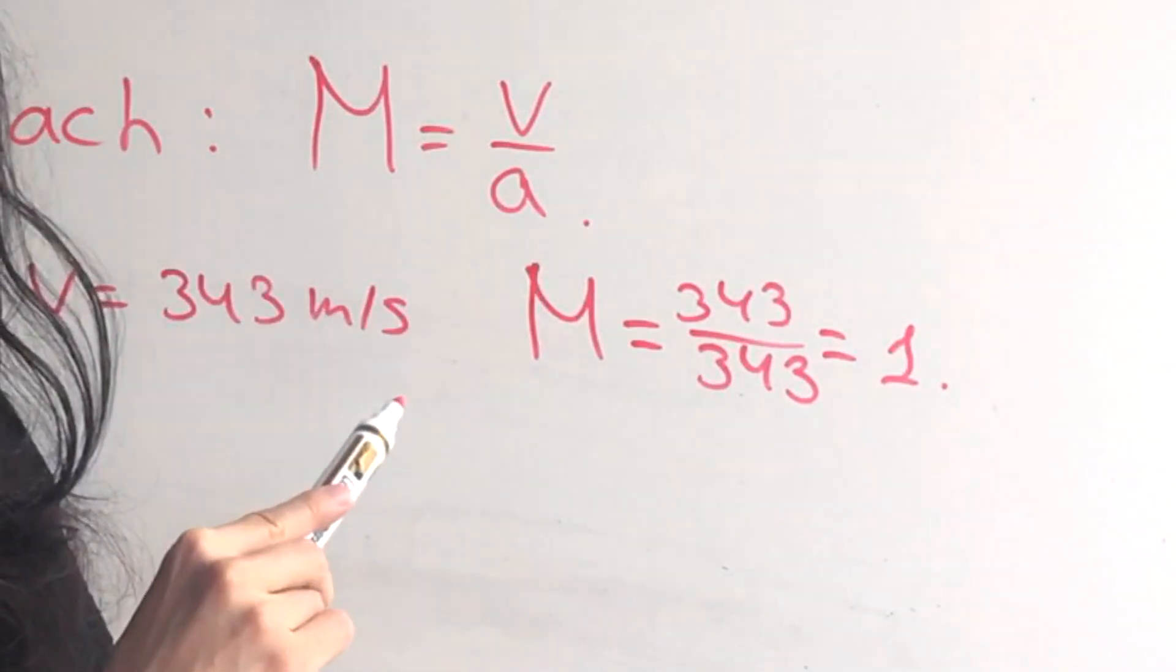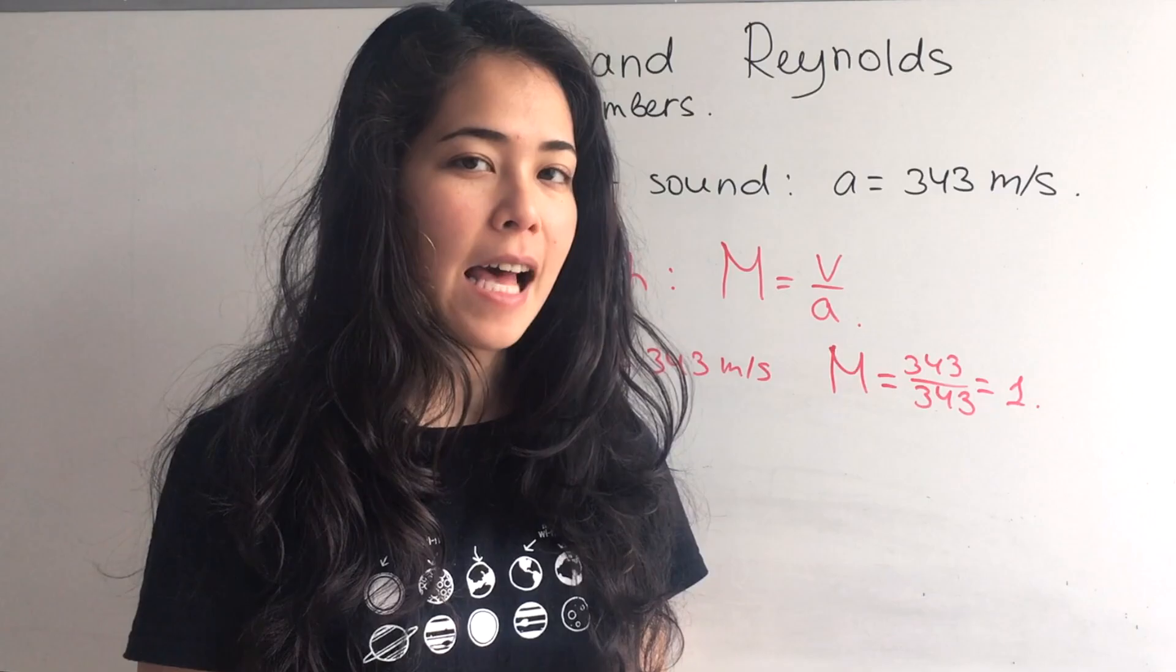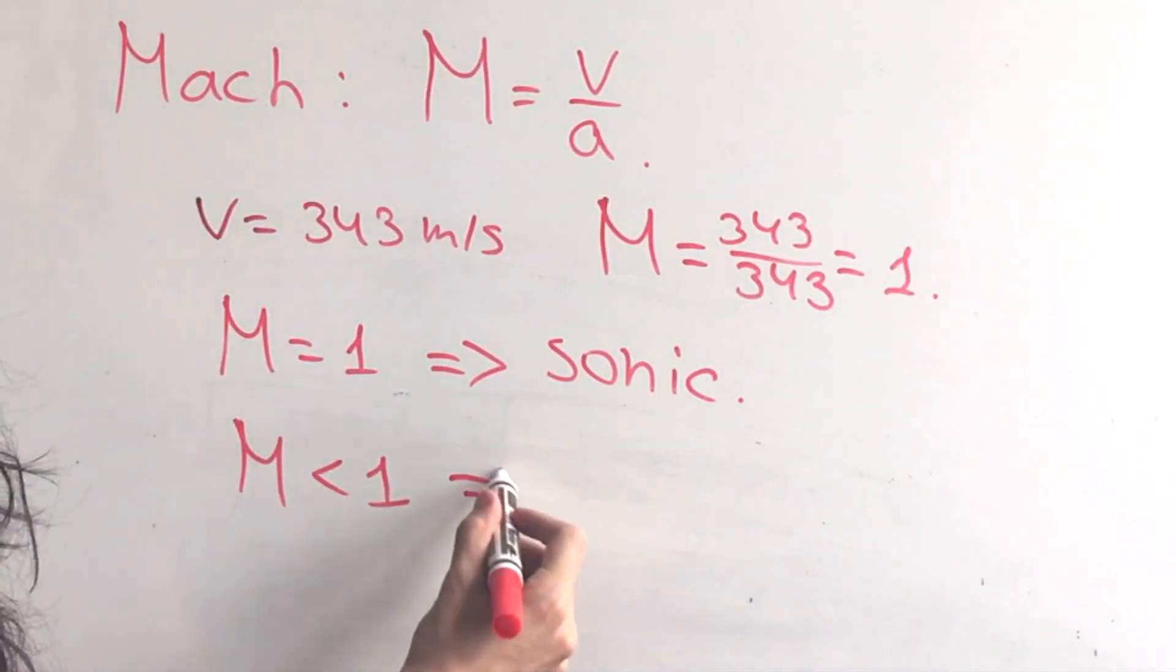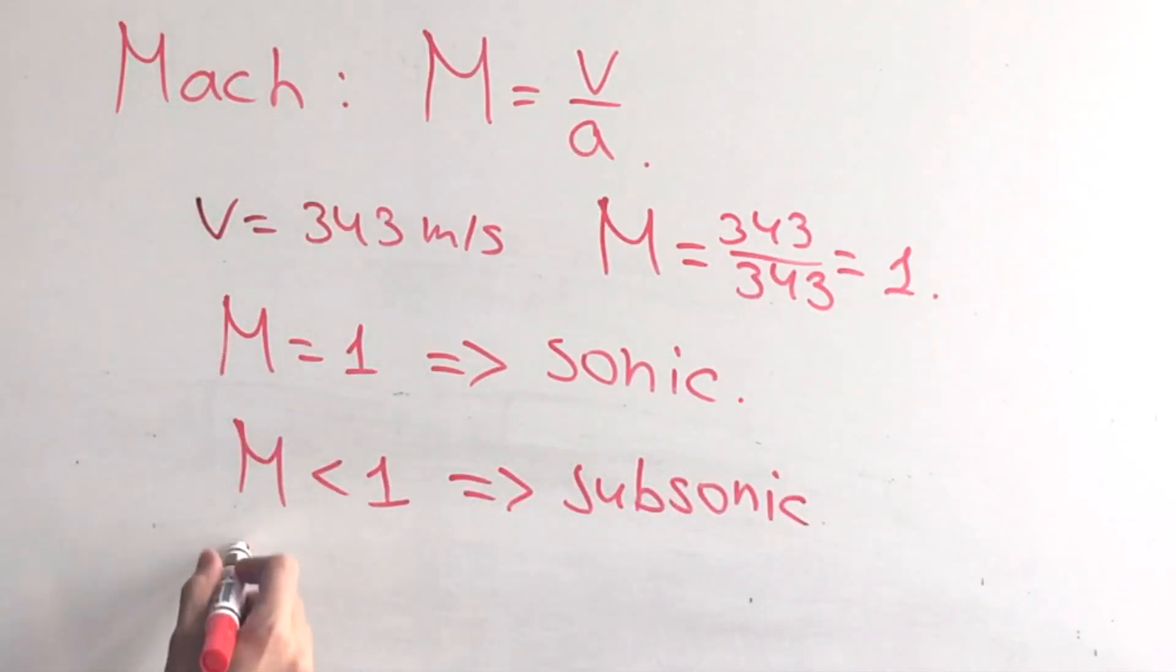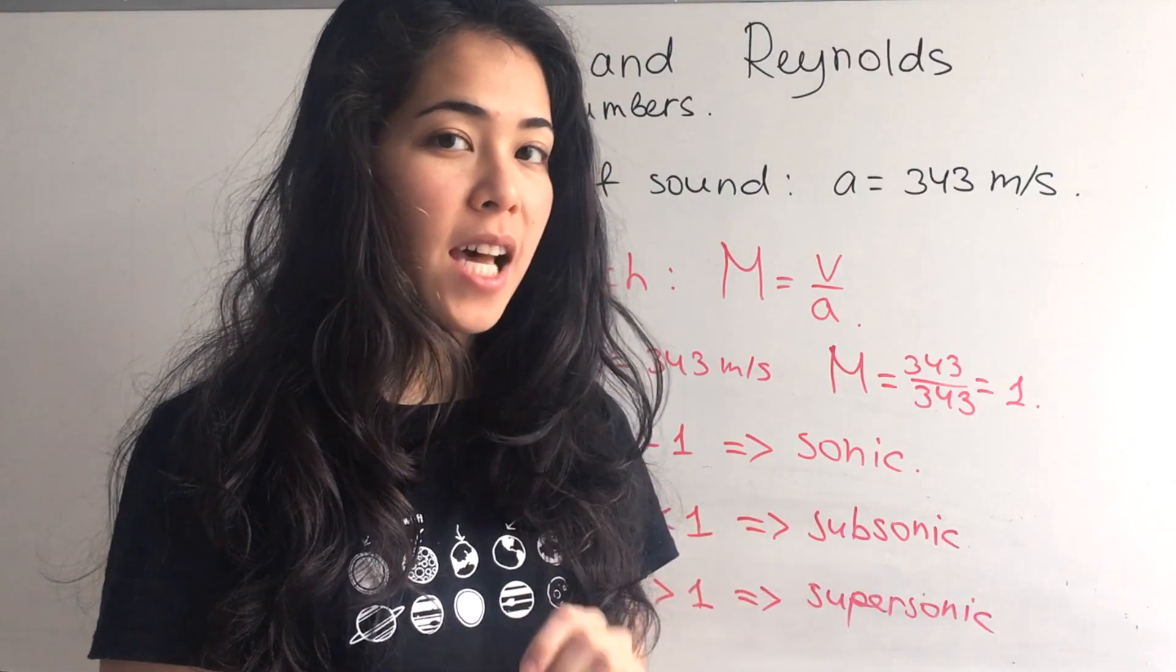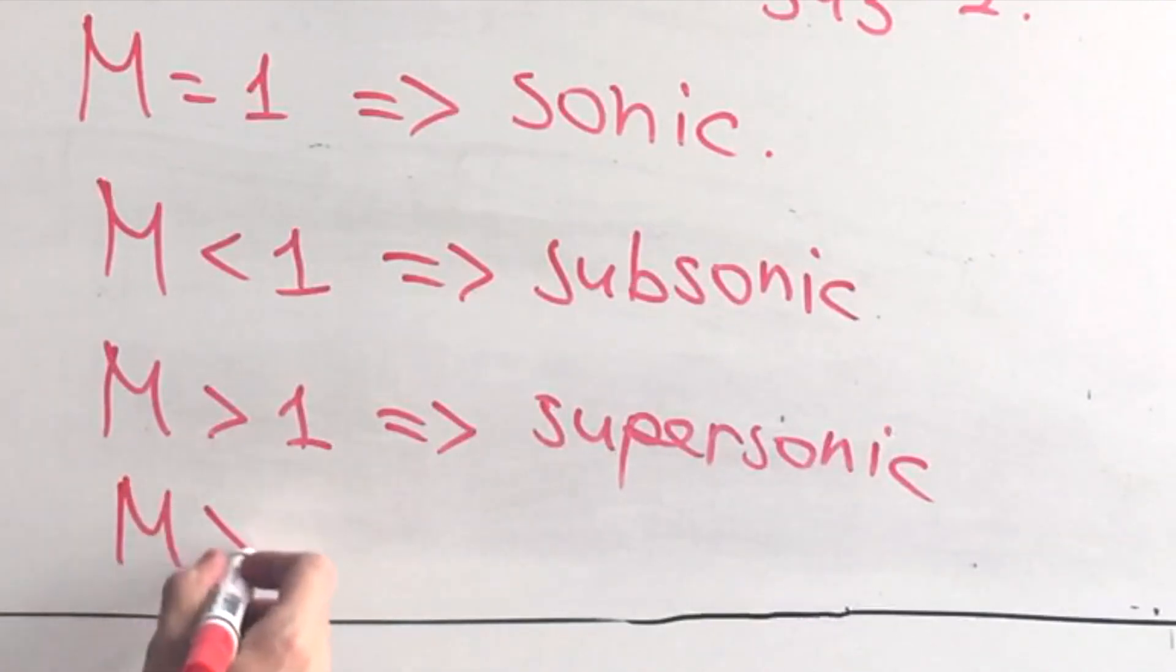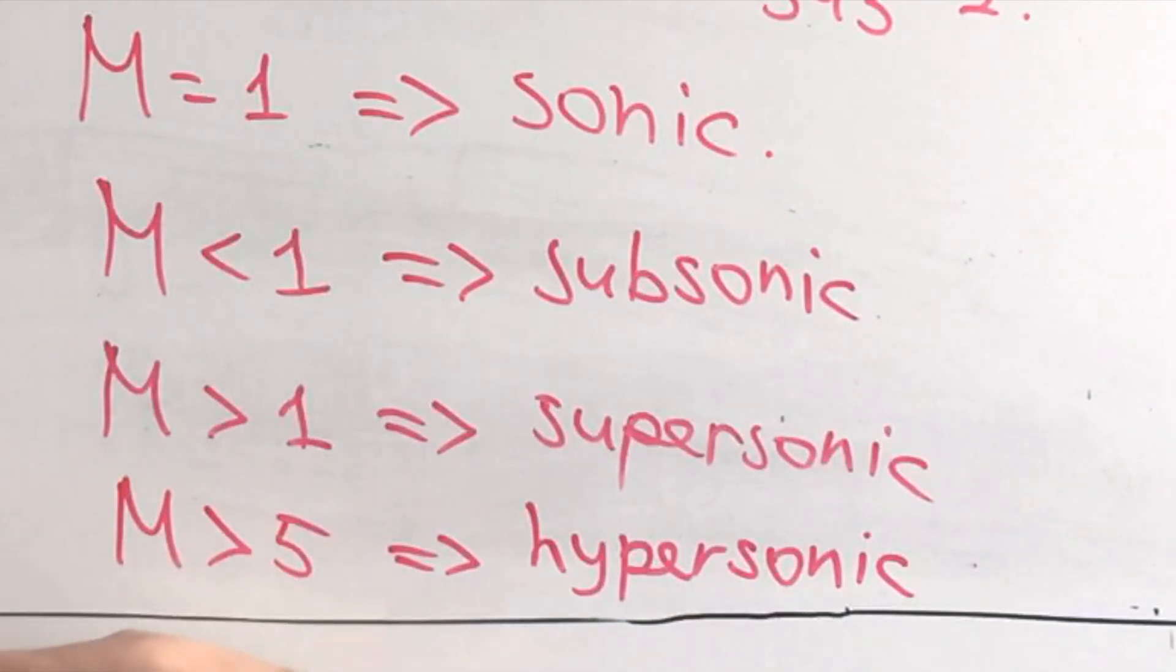It's gonna be Mach 1. How would we call that flight? Well, it's gonna be sonic flight - sonic is exactly at the speed of sound. If Mach number is less than one, then it's called subsonic because we are lower than the speed of sound. If Mach number is greater than one, it's called supersonic. And there's one more type of flow when Mach number is greater than 5 - this type of flight is called hypersonic.